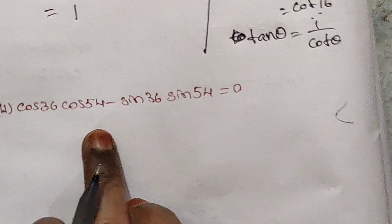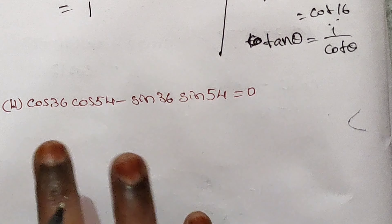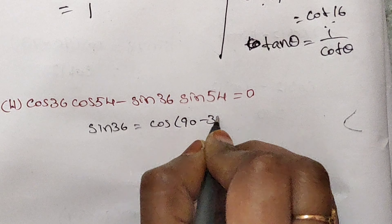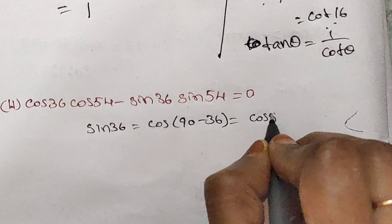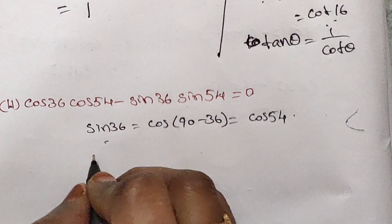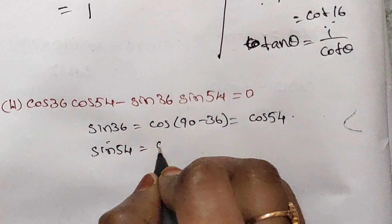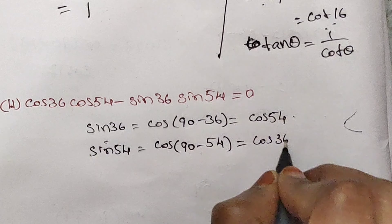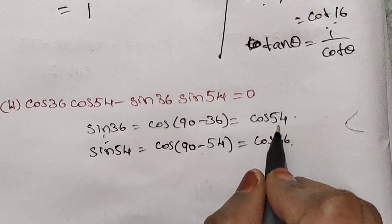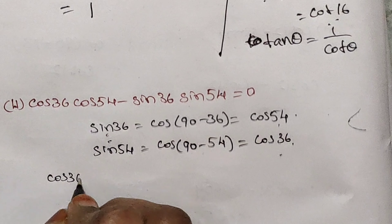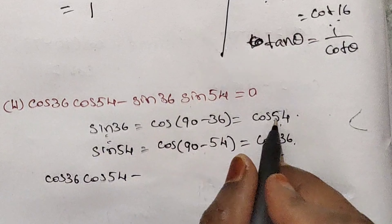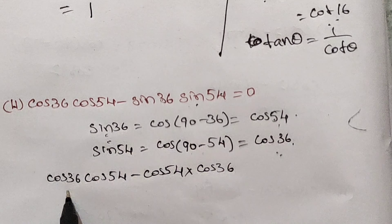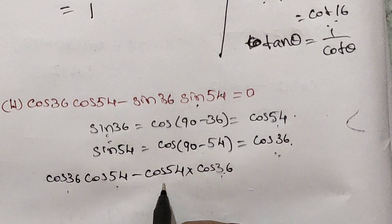Next question: show that cos 36 into cos 54 minus sin 36 into sin 54 is equal to 0. I will change sin 36: sin 36 can be written as cos(90 minus 36), which is cos 54. I will change sin 54: sin 54 can be written as cos(90 minus 54), which is cos 36. So sin 36 equals cos 54 and sin 54 equals cos 36. Substituting: cos 36 into cos 54 minus cos 54 into cos 36 is equal to 0.